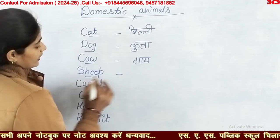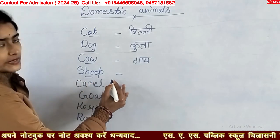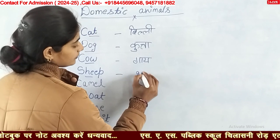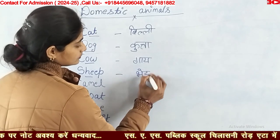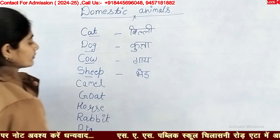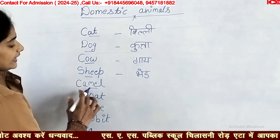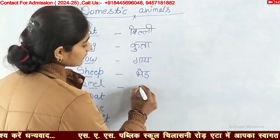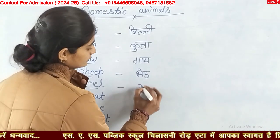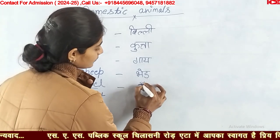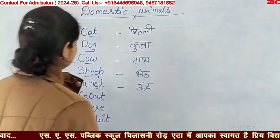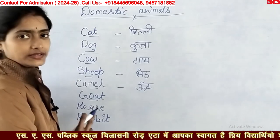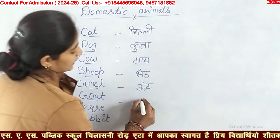Sheep — S-H-E-E-P — sheep means bher. Camel — C-A-M-E-L — camel means oot. Goat — G-O-A-T — goat means bakri.